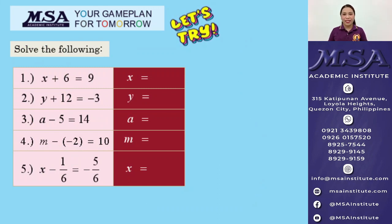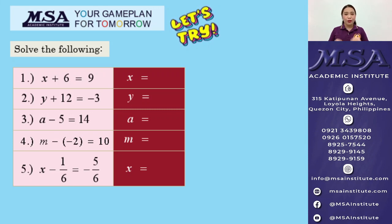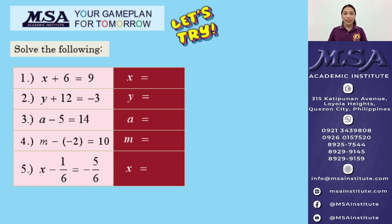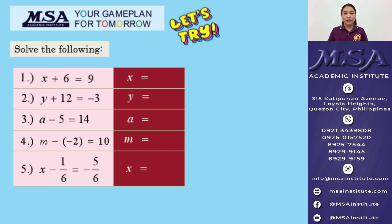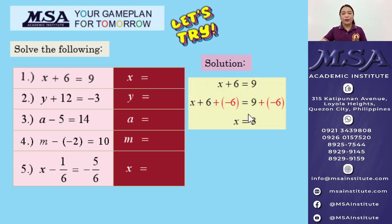Let's have some exercises. Solve the following 5 items. If you can solve them mentally, great. If not, use scratch paper and pen. You can also comment below if you have questions or topics you'd like us to discuss in future videos. Let's try the first item: X plus 6 is equal to 9. Add negative 6 on both sides and simplify. 9 plus negative 6 gives us positive 3. So, the value of X is 3.